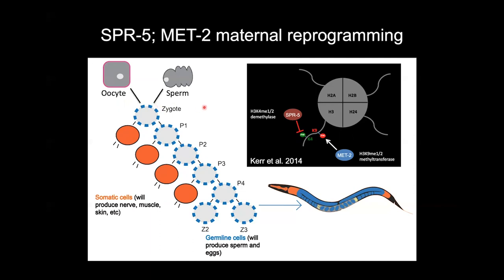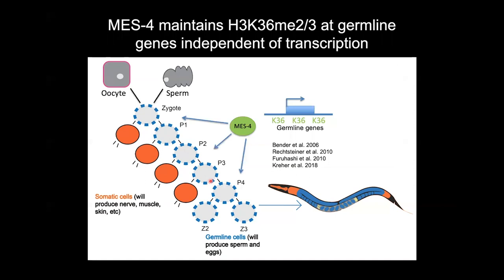C. elegans has another problem to get over. In the presence of this reprogramming event that's wiping the slate clean, you also have to maintain germ cell fate — in the absence of transcription. From beautiful work by Craig Mello, Geraldine Seydoux, and others, we know there's a molecule called PIE-1 that segregates into these P-blastomeres and prevents transcription globally. If you don't have PIE-1, these germ cells start turning into somatic cells. So how do you maintain germ cell fate in the presence of reprogramming and in the absence of transcription?